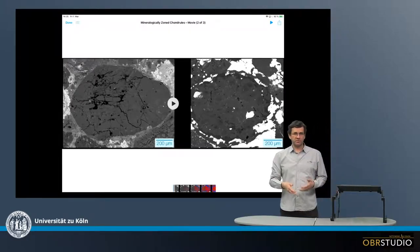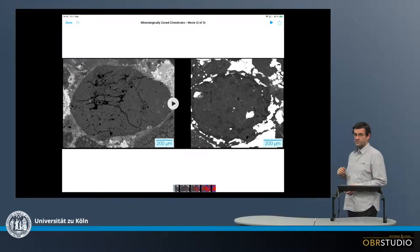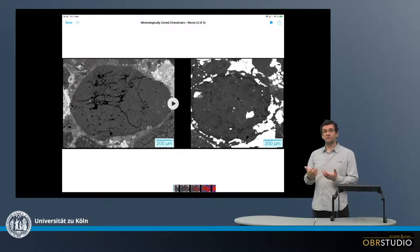Now when we use a scanning electron microscope or electron microprobe, we can make element maps of these objects. And from these element maps we can produce phase maps.